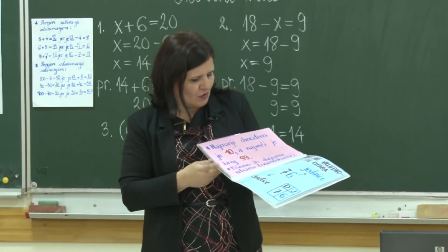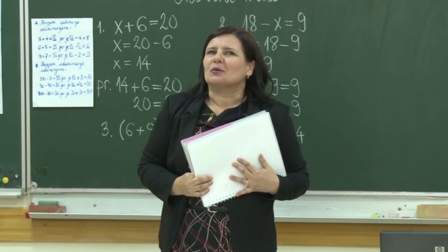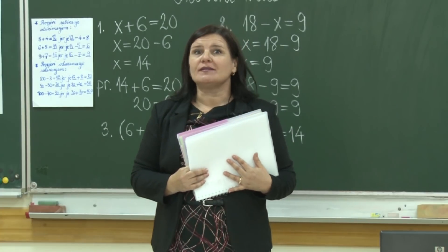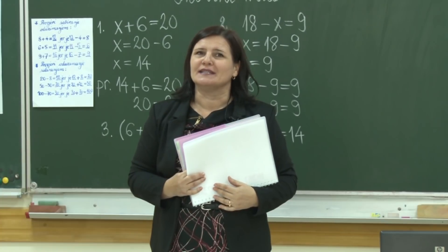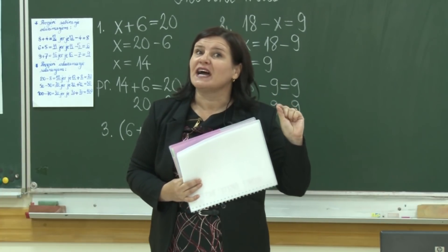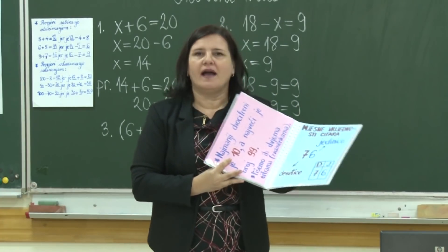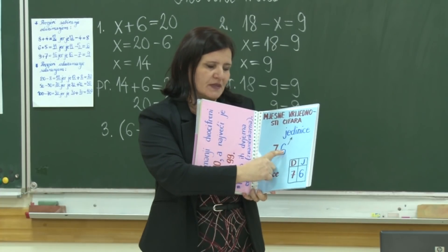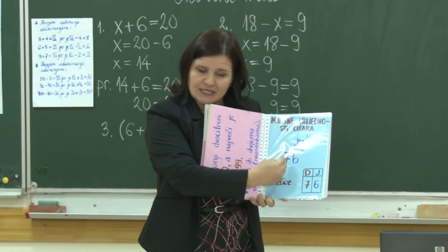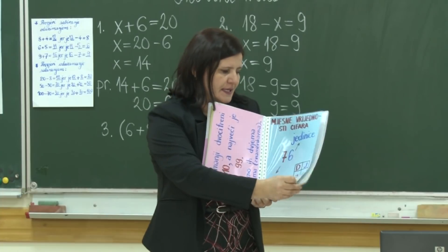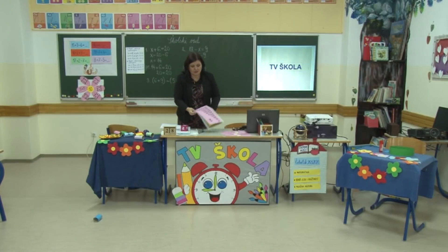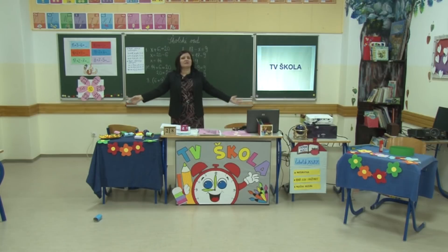Koji je najmanji dvocifreni broj? Zapisan sa dvije cifre — 10. Bravo! A najveći? 99. Bravo! Prisjetimo se i mjesnih vrijednosti cifara. U broju 76, sa desne strane je mjesto jedinica, a sa lijele strane mjesto desetica. I naravno idu naša geometrijska tijela i oblici. Učiteljica je stala ovdje — nisam imala više snage da pravim slikovnicu, ali završit ću je sigurno do sljedeće godine. Toliko iz matematike.